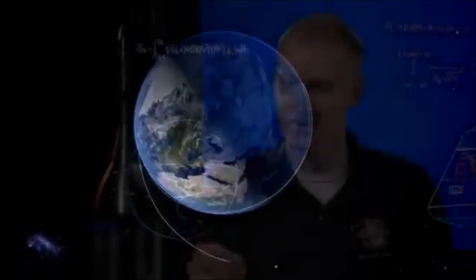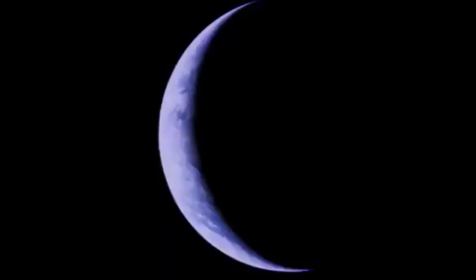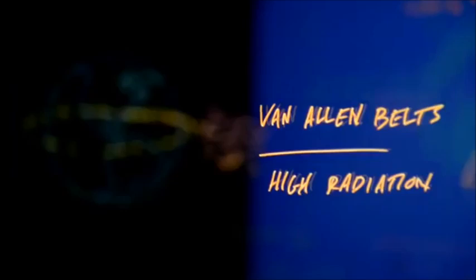We are headed 3,600 miles above Earth, 15 times higher from the planet than the International Space Station. As we get further away from Earth, we'll pass through the Van Allen belts, an area of dangerous radiation.